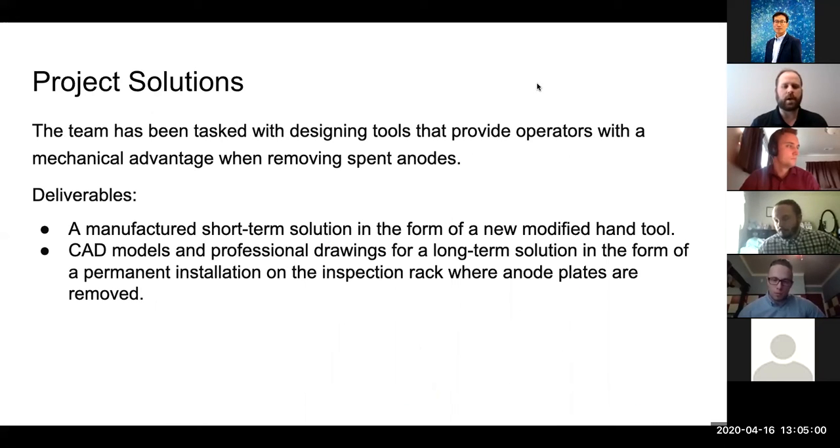The solutions that Rio Tinto was looking for from our senior design team is they wanted us to redesign and provide tools that give the operators mechanical advantages when removing the spent anodes, hopefully reducing the stress on their bodies. Our deliverables to Rio Tinto is a manufactured short-term solution, which is a modified version of their current hand tool, and CAD models and professional drawings for a long-term solution, which will be an add-on mechanism to their current inspection rack.